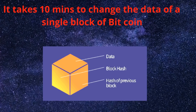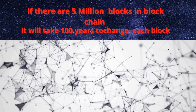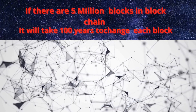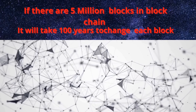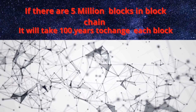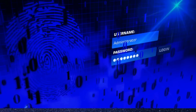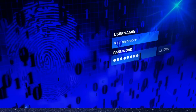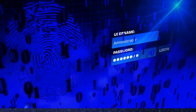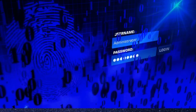If you think you can change the hash of every block on the blockchain, it is practically impossible to do this. For instance, assuming you take 10 minutes to change the hash of one block and there are a total of 5 million blocks in the chain, then it will take almost 100 years for you to change the hash of each block, making it practically impossible.